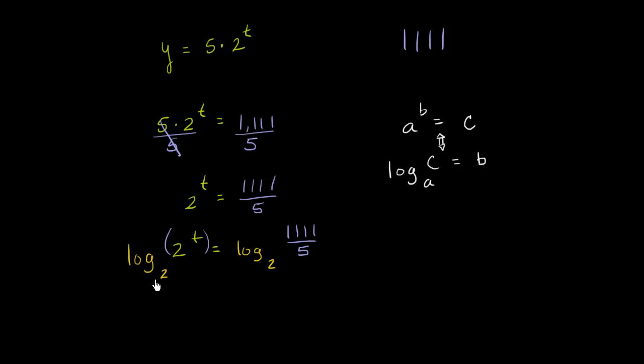So this thing right over here just simplifies to t. That just simplifies to t. And on the right-hand side, we have log base two. We have all of this business right over here. So I'll just write it over. T is equal to log base two of 1,111 over five.